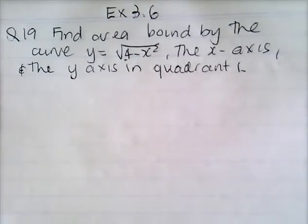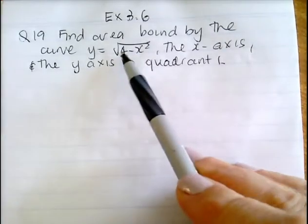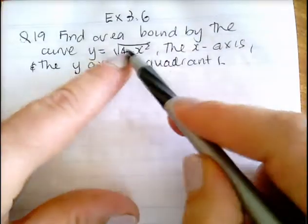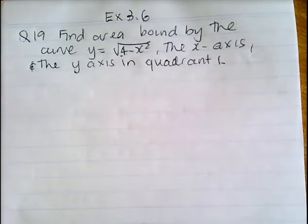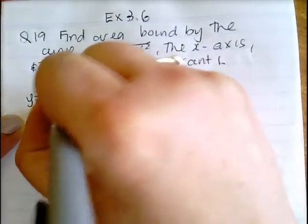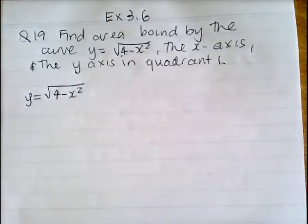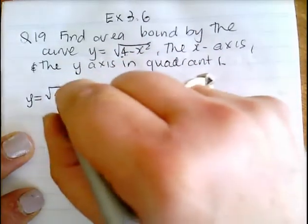Whenever you see y equals the square root of something like a minus x squared, it's either going to be half a parabola or half of a circle. To be able to tell which one it is, you square both sides.